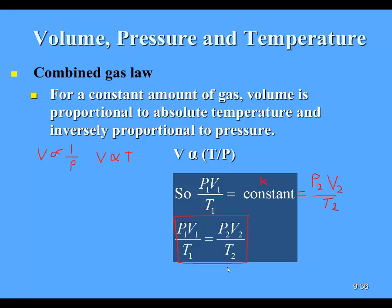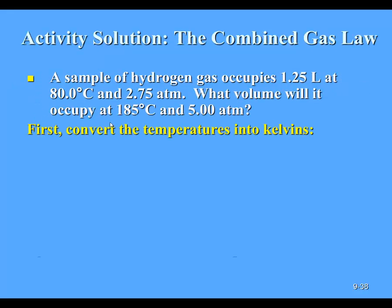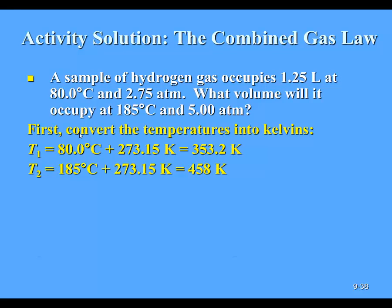Let's apply the combined gas law. We have a sample of hydrogen gas occupying 1.25 liters at 80.0 degrees Celsius and 2.75 atmospheres. We want to find the volume at 185 degrees Celsius and 5 atmospheres. First, convert temperatures to Kelvin: 80 degrees Celsius plus 273.15 gives 353.2 Kelvin, and 185 degrees Celsius plus 273.15 gives 458 Kelvin. Defining variables: V1 equals 1.25 liters, T1 equals 353.2 Kelvin, P1 equals 2.75 atm. The final temperature is 458 Kelvin and the final pressure is 5 atmospheres; we need to solve for V2.